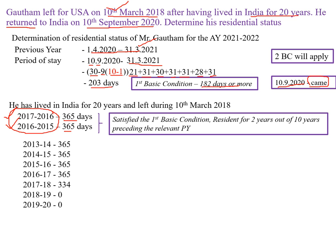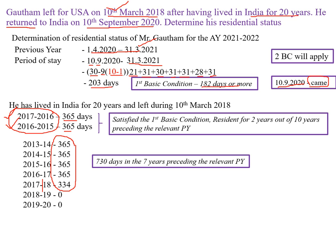Our previous year is 2020-21, so the 7 years before that are considered. This person left India only in March 2018, so approximately 30 days are reduced for that month. For 2016-17, 2015-16, 2014-15, and 2013-14, he was inside India throughout the year. Altogether, this person was inside India for more than 730 days. So he has satisfied the second additional condition also. Since he satisfied the first basic condition and both additional conditions, he is an ordinarily resident for the assessment year 21-22.